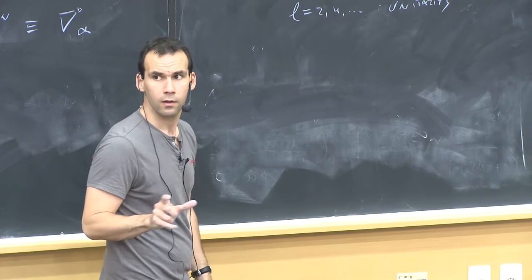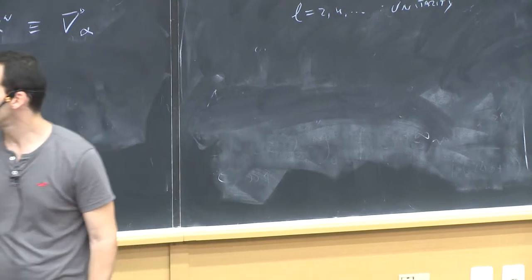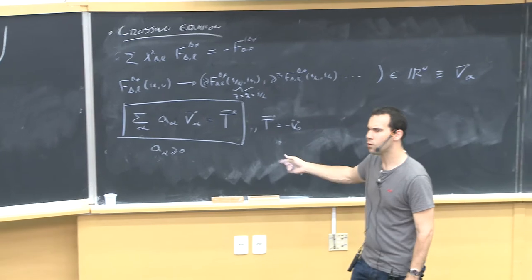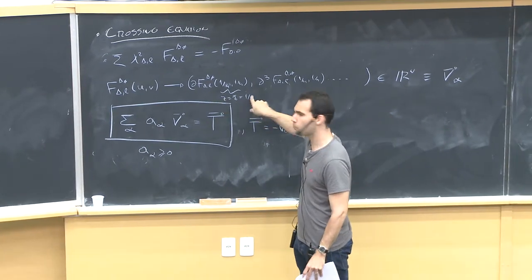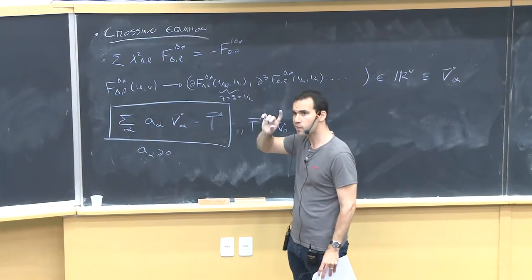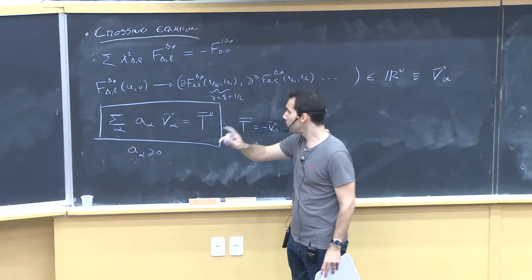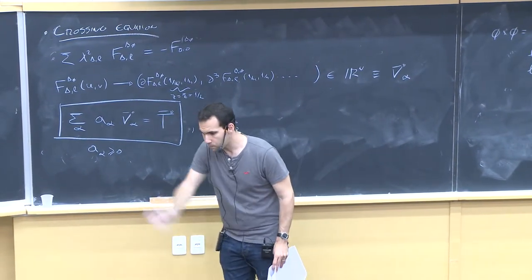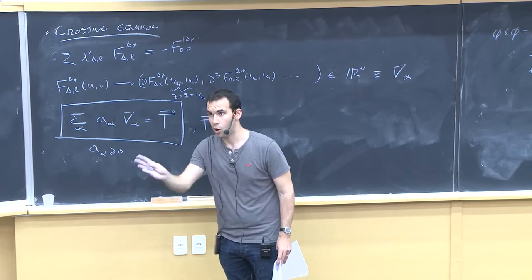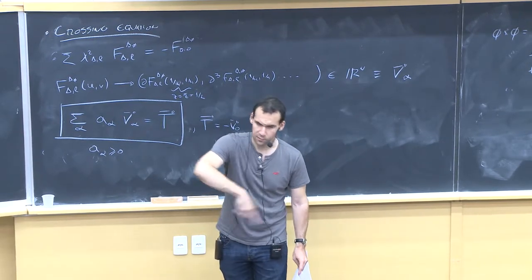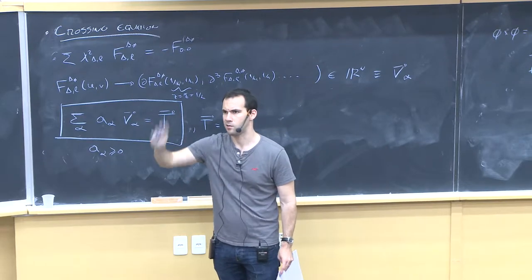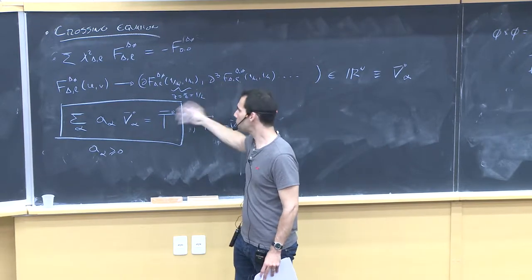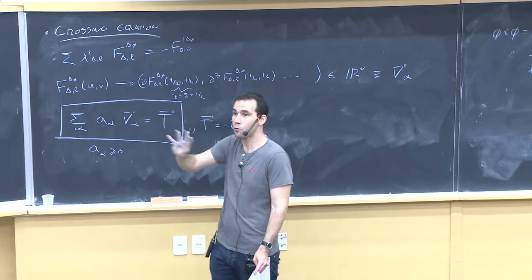Question about the choice of derivatives: you can evaluate F at this point — it's zero so you need to take at least one derivative. The derivatives along z = z-bar have to be odd; the transverse ones can be anything. This is schematic. Just compute all the derivatives that you want — some of them will be zero, so you don't need to include them.